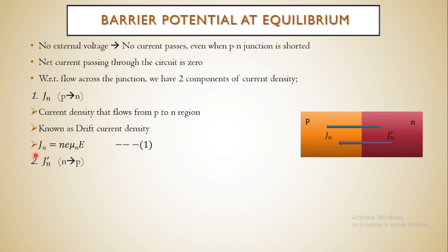In general, current density equals σ·E, that is conductivity times electric field. Here conductivity is N·E·μ_N, which corresponds to the drift current density. Remember that we are not applying any external voltage; the electric field intensity E is caused by the potential barrier voltage itself. In our previous class, when discussing the energy level diagram, we understood about the potential barrier, which we denoted as V_B.